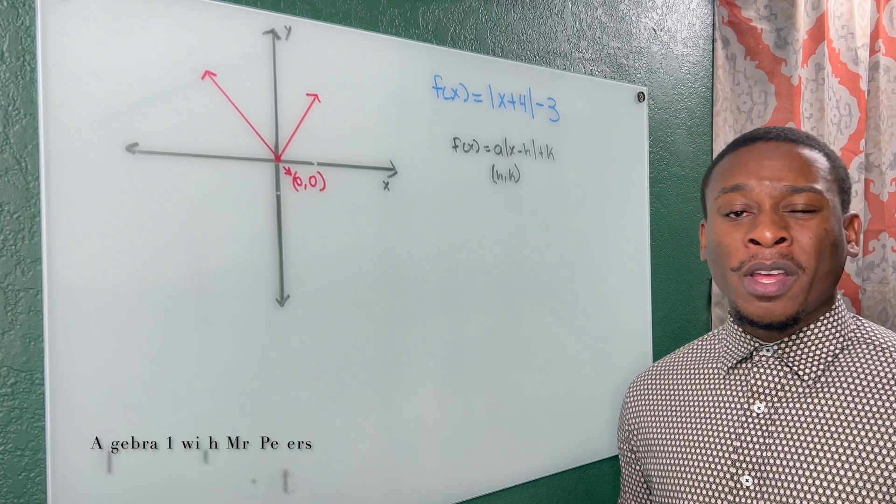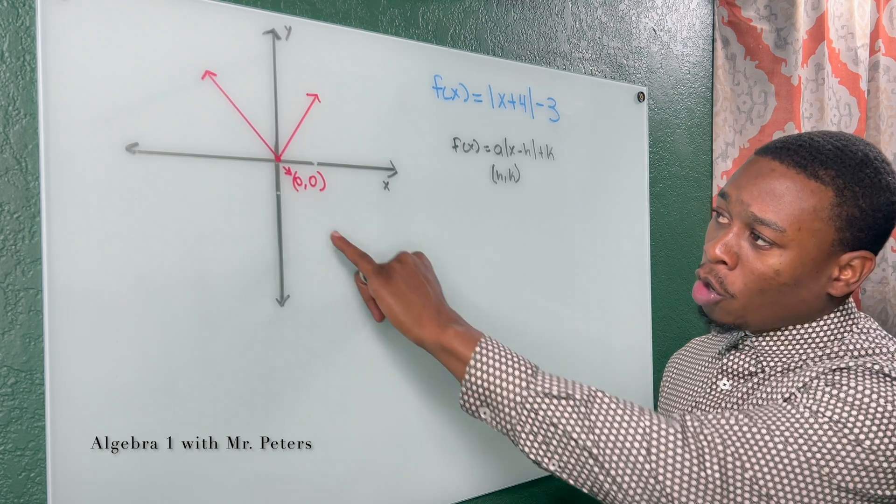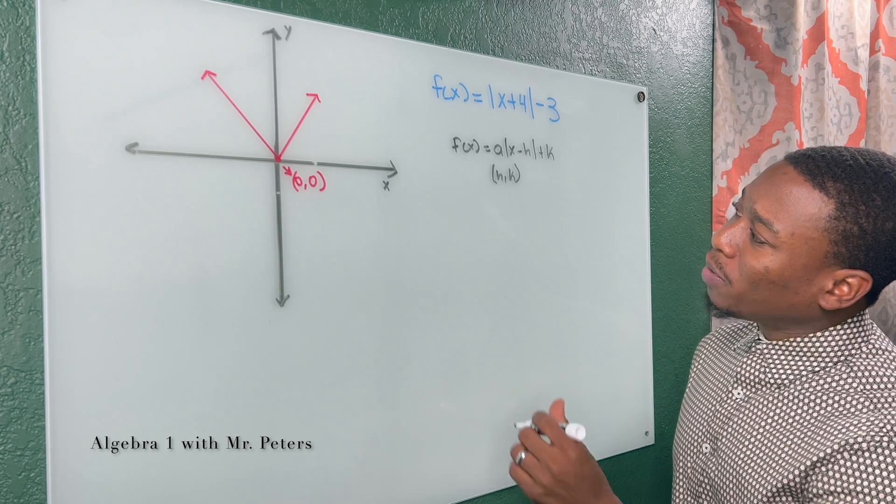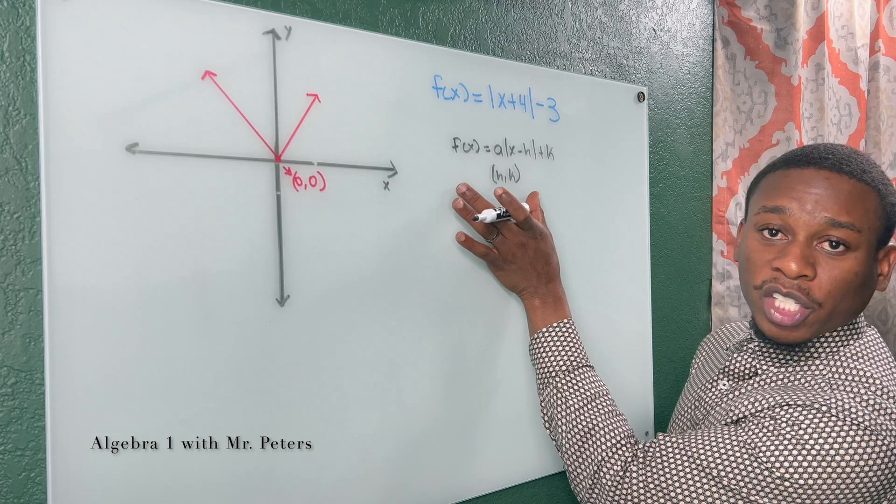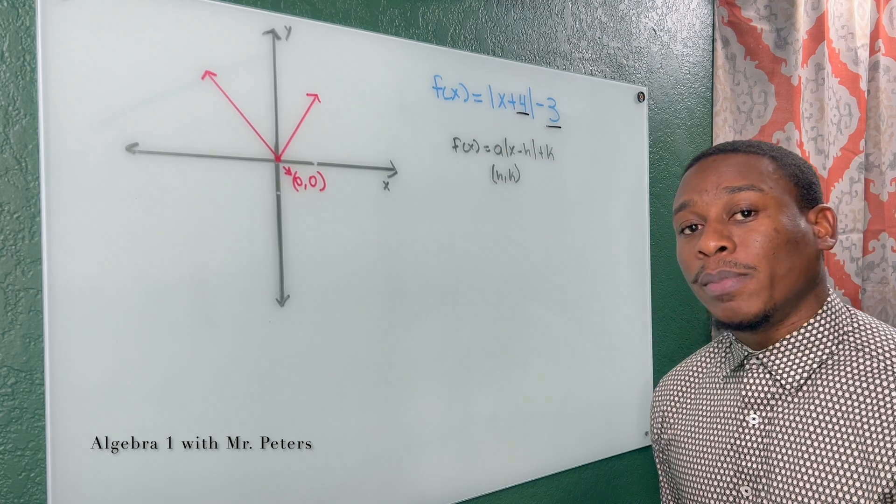As we start this video off, the most important thing we need to know is just the parent graph, which should look like this. We're going to have a vertex at zero, zero. And when we look at the absolute value function equation, we should understand that h, k is going to be our vertex.